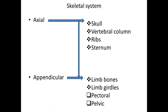The skeletal system is divided into the axial skeleton and the appendicular skeleton. The axial skeleton forms the bones which make up the central axis of the body. The appendicular skeleton consists of the bones which support the forelimbs and hind limbs.